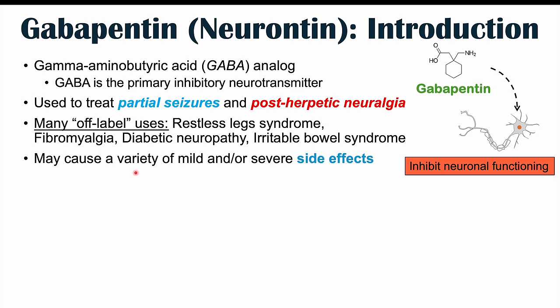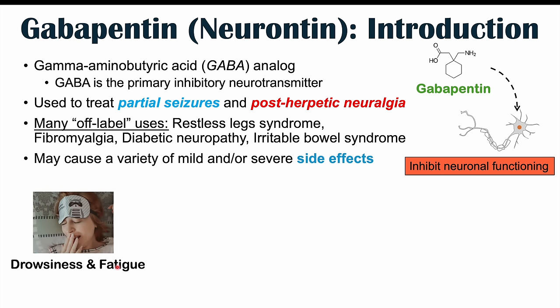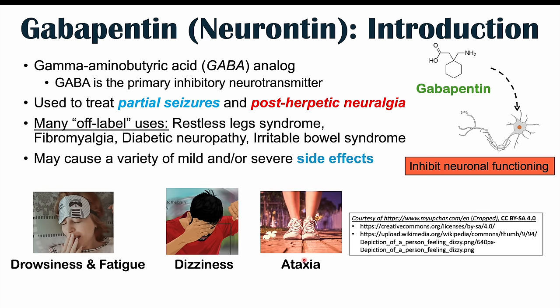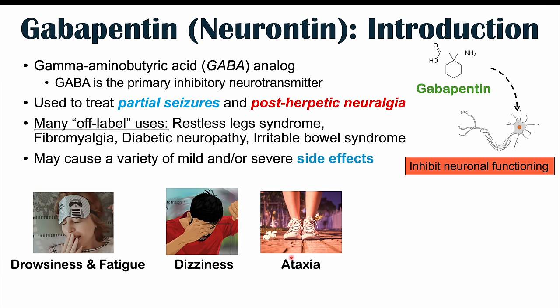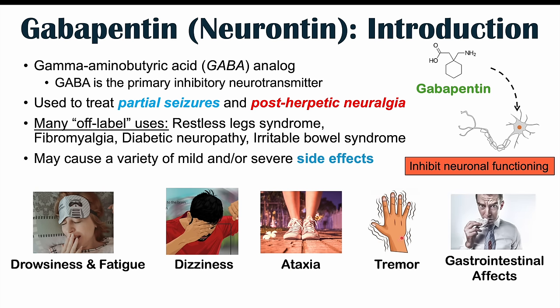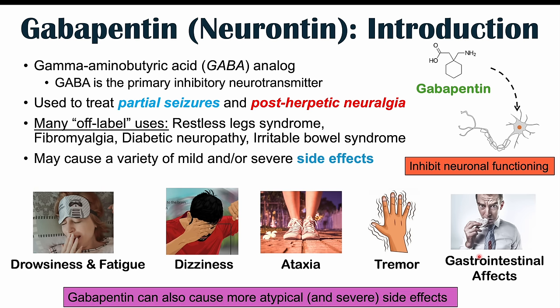Gabapentin causes a variety of mild and or severe side effects. These include drowsiness and fatigue, dizziness, and ataxia — which is clumsiness or difficulty with muscle coordination — occurring in roughly 20% of patients. Tremors can also be noted, as well as gastrointestinal effects including weight gain, nausea, vomiting, diarrhea, and constipation. For more information, check out my lesson on the common side effects of gabapentin. This lesson focuses on the weird and atypical side effects, some of which can be severe.